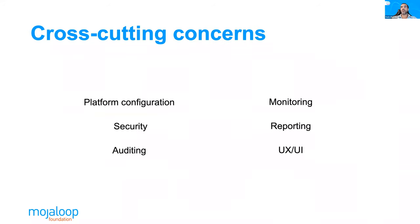Some of the problems we identified during the DDD sessions are of a general nature — cross-cutting concerns. These cross-cutting concerns don't belong in any of the specific areas shown, but they must still be designed and implemented in a consistent way by the entire system to deliver value. Unfortunately, we didn't have time in this PI to dedicate too much to this area, but we will continue working on the reference architecture and include recommendations for the next platform version. These include problems like platform configuration, monitoring, security, and auditing — very important problems that we need to solve in a centralized way.